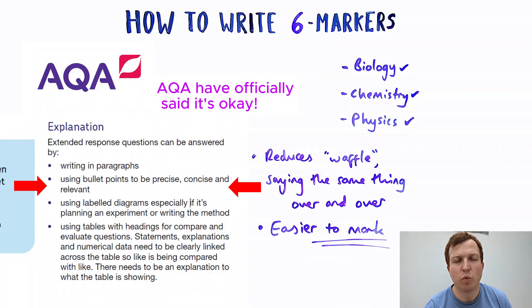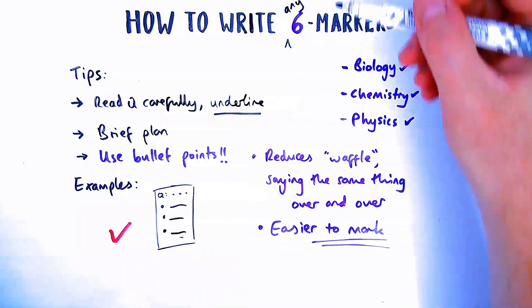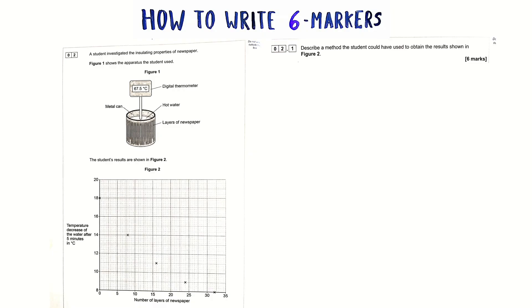So let's have a look at some examples of where you might do this and what difference it might make to your answers. We're going to start off with a required practical question about insulation. We're not looking so much at the content but the exam technique and how people write their answers. I'm going to show you three answers for the six mark method question, looking at what kind of things they include and whether they use bullet points.